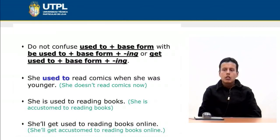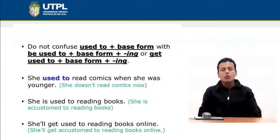But if I say 'She is used to reading books,' the meaning is different. 'She is used to reading books' means that she is accustomed to reading books — ella está acostumbrada a leer libros. Here you can see that the structure is even different: it is 'be used to' and the other verb goes with -ing. 'She is used to reading' — which is very different from the structure of 'used to.'